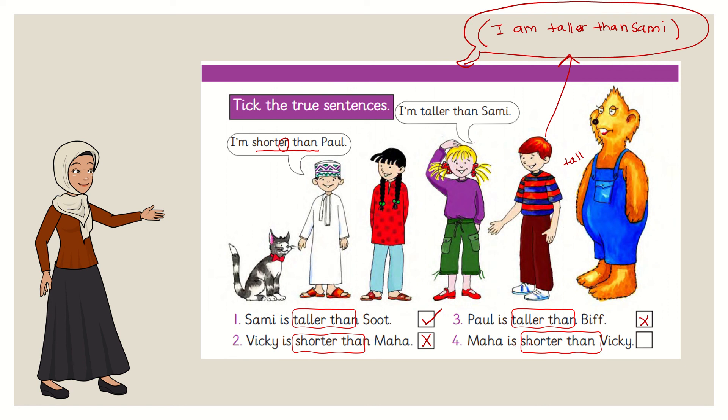Number four. Maha is shorter than Vicky. Is it correct? Yes, it is correct. Now stop the video and please write the answers that I wrote in red above the picture.